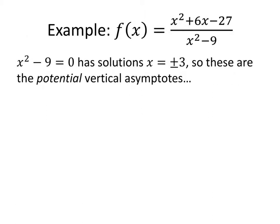Let's see how this works with an example. We've got f of x equals x squared plus 6x minus 27, all over x squared minus 9. The places where we might have vertical asymptotes are where this denominator equals 0. Setting the denominator equal to 0 and solving gives us x equals plus or minus 3.